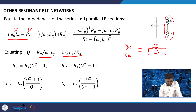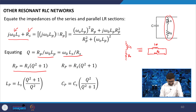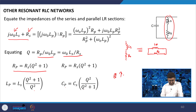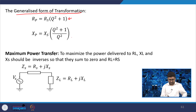Using Q in the equations: Rp = Rs(Q² + 1), Lp = Ls(Q² + 1)/Q², and Cp = Cs × Q²/(Q² + 1). If Q is very high, then Lp ≈ Ls and Cp ≈ Cs. The generalized transformation formula is: Rp = Rs(Q² + 1), and Xp = Xs(Q² + 1)/Q².